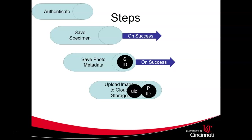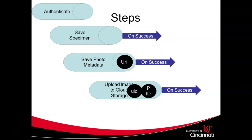We can take that photo ID and the user ID and upload an image to Firebase Cloud Storage using both. Once we've done that, we get back a public URI. We can take that public URI and go back to update our photo metadata with the location of the image. It's a series of sequential steps: save specimen, if successful save photo metadata, if successful upload the image, if successful update the photo metadata with the image location. Each step has to succeed in sequence. If one fails, we need to think of an alternative path — try again, roll back, or examine the failure message.